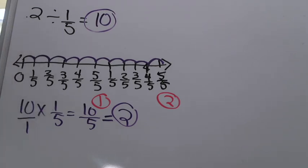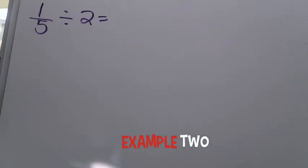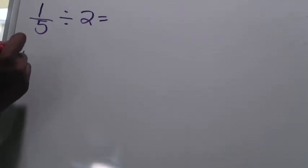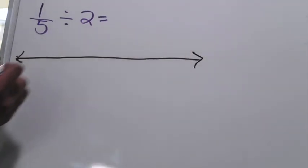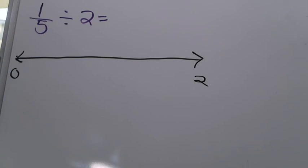Here's our second example: dividing a fraction by a whole number. I've switched everything around — one-fifth is now my dividend and two is now my divisor. What doesn't change is that the whole number still tells me how big of a number line to create, so it still needs to go from zero to two. And just like before, I look at the fractional part — one-fifth — to know I'll divide the number line into fifths.